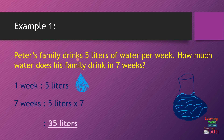Let me read the question for you. Peter's family drinks five liters of water per week. Per week means one week. How many days do we have in one week? From Sunday until Saturday — we have seven days.